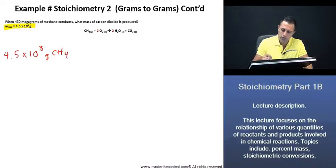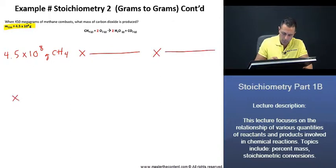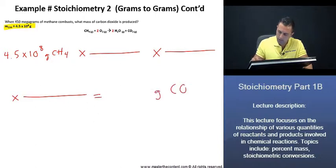4.5 times 10 to the power of 8 grams of our methane. Now, what we need to do, we said we're going to need to make three conversions. Thus, without even filling in the numbers, we can just make this line a little shorter. We can just go ahead and write in three conversion factors, and then we'll do another one down here. That's going to give us our grams of carbon dioxide.